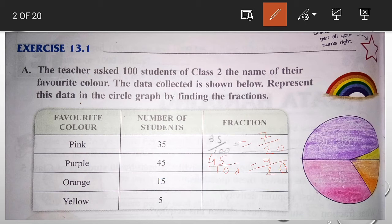Now 15 upon 100. How much will it be? In 5's table, 15 comes at 3, so here is 3, and in denominator 20 as it is. Because if we divide 100 by 5, it will be 20. Here, 5 upon 100, so that is 1 upon 20.